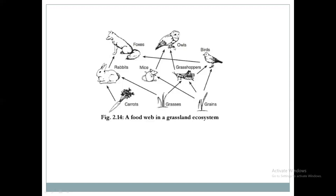So one animal is dependent upon two or more animals, and that is shown in this food web — how they are dependent upon each other. The arrows show what they consume. Some animals consume only one type of organism, while some animals depend upon two or more than one organism. They may depend upon several animals and several organisms. They are interlinked with each other, and this organism depends upon several organisms for their food.